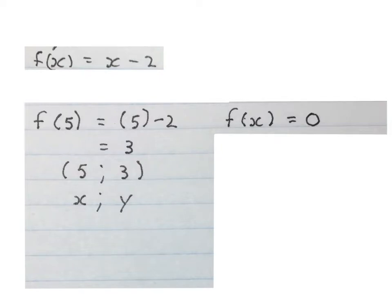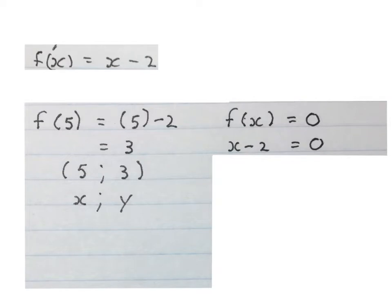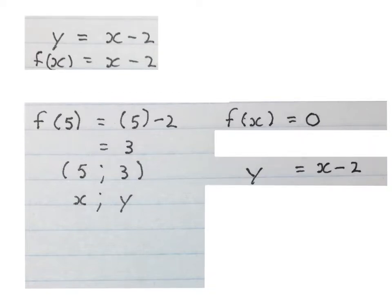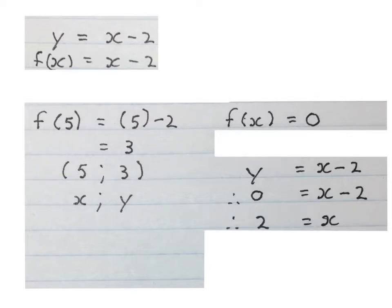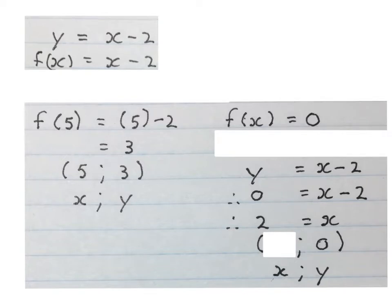The next question reads: determine X if f of X equals zero. You will see that this number was not in a bracket. You've got two ways to do it. I prefer to rewrite the equation in Y-equals form, then replace the Y with zero and solve for X by adding 2 to both sides, giving us X equal to 2. We had the Y value which was zero and we worked out the X value which was 2.